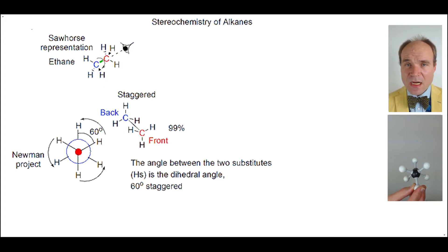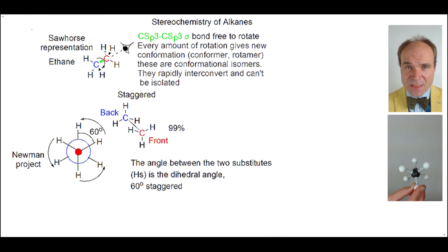Now the carbon-carbon single bond can rotate. Even if it rotates the smallest amount, you have a new conformation. These are called conformers, or alternatively, rotomers. Two conformers are conformational isomers of each other. It's impossible to isolate a single conformer. Even the smallest amount of energy is enough to rotate the carbon-carbon bond, creating a new conformer.